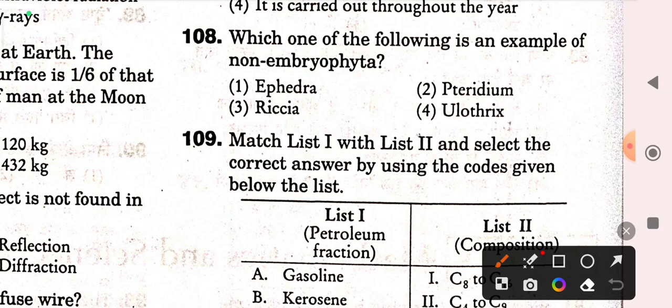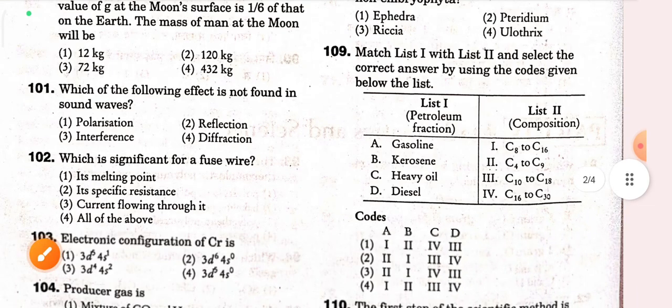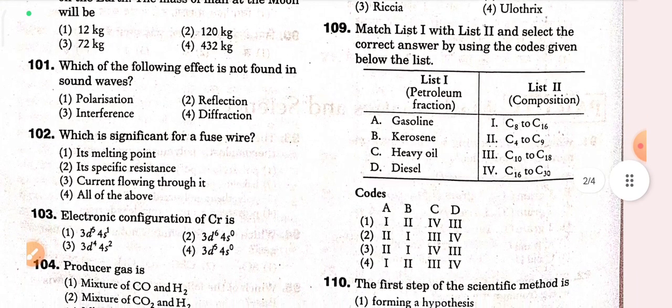Next question: match list one with list two and select the correct answer using the codes given below. For petrol, the correct option is C4 to C9 — option two. For kerosene, it is C8 to C16 — option one. For heavy oil, it is C16 to C30 — option four. For diesel, it is C10 to C18 — option three. The overall correct matching is option 3.